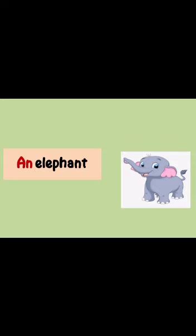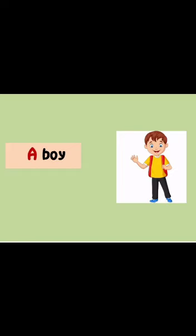This is an elephant picture. The spelling of elephant is E-L-E-P-H-A-N-T. The beginning letter of elephant is E, which is a vowel. There are five vowels: A, E, I, O, U. So for elephant we use AN. We say: an elephant.